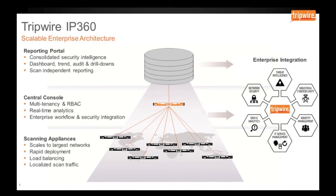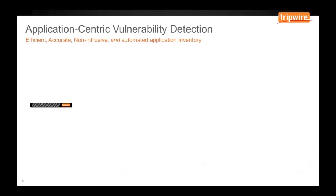Tripwire IP360 is an appliance-based technology, but the appliances can be either physical or virtual. Tripwire IP360's central console is the command and control center for the scanning process. As the scan is completed, the results are sent to the reporting portal to provide broad access by participants in the vulnerability management workflow process.